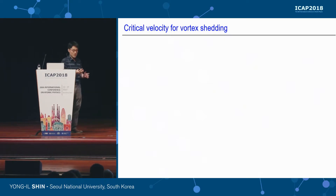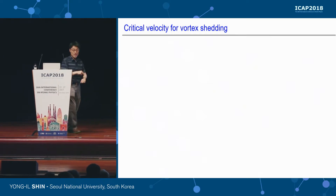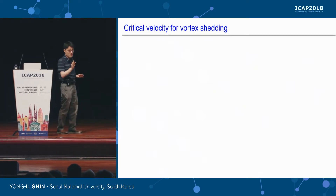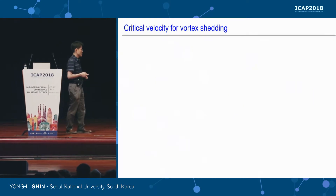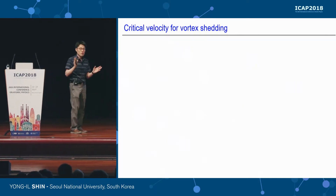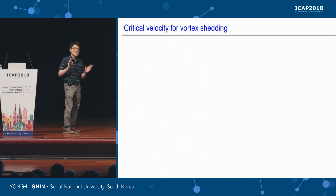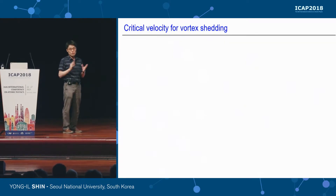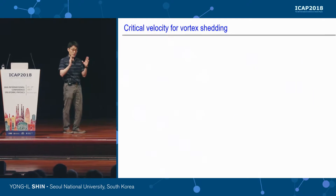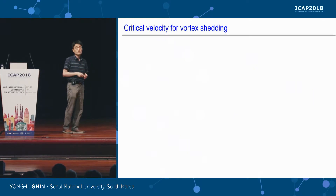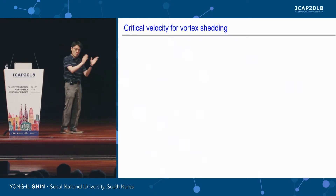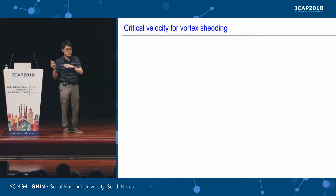Now I want to move to the second part of my talk, which is about the critical velocity for vortex shedding. Depending on how you think about your system's excitations, there are two theoretical frameworks for thinking about the critical point of vortex nucleation: a global approach and a local approach.